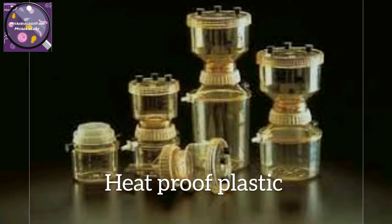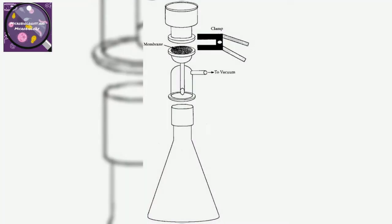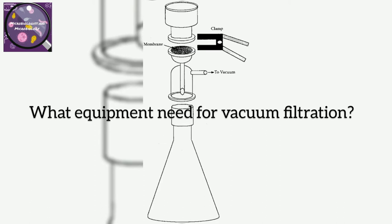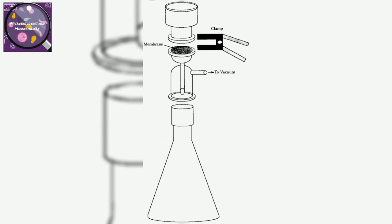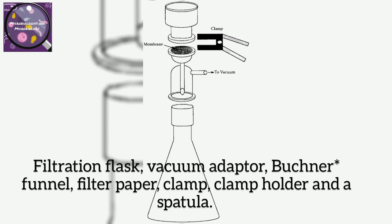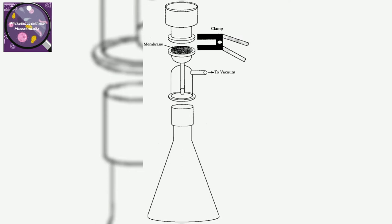The question is: what equipment is needed for vacuum filtration? We will need a filtration flask, vacuum adapter, Buchner funnel, filter paper — the diameter of filter paper depends on the size of your funnel — a clamp and clamp holder, and a spatula.